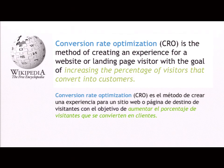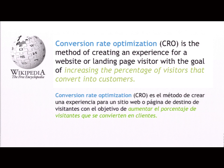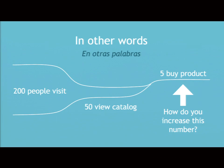What is conversion rate optimization? If we look at Wikipedia, it basically says it's the method of creating an experience for a website with the goal of increasing the percentage of visitors that convert into customers. It's kind of hard to wrap your brain around what's happening here, but there's a better way to think about it.